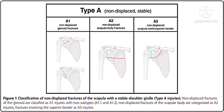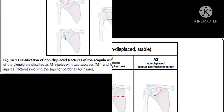Type A classification covers non-displaced fractures of the scapula with a stable shoulder girdle. Type A injury: non-displaced fracture of the glenoid is classified as A1 injury with two subtypes A1 and A2. Non-displaced fracture of the scapular body is categorized as A2 injury. Fracture involving the superior body is an A3 injury.